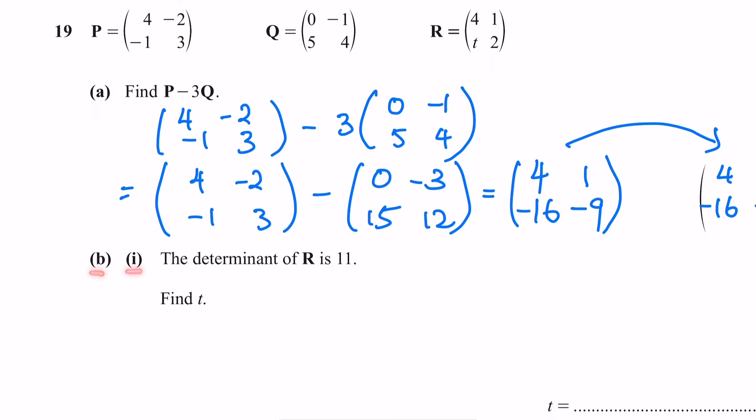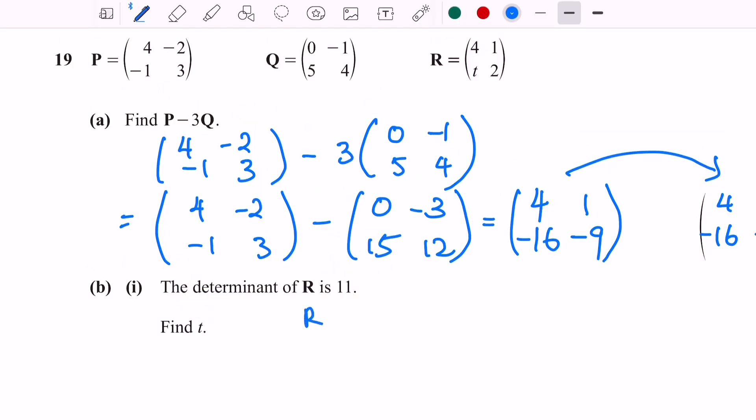Part b(i): The determinant of R is 11, find t. We have the matrix of R given here. R is 4, 1, t, and 2.